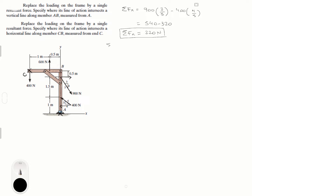Now the same thing for the sum of the forces in Y. The sum of the forces in Y includes the 400 N force going down, the 600 N force going up, the Y component of the 900 N force, and the Y component of the 400 N force. That's minus 400 plus 600 minus 900 times 4/5 plus 400 times 3/5, which equals negative 280 newtons. That is the resultant force in the Y direction.